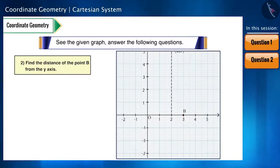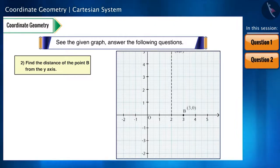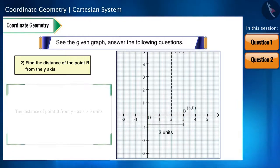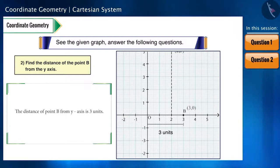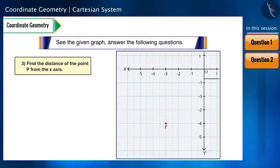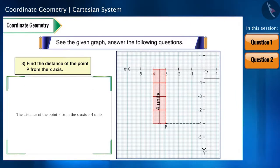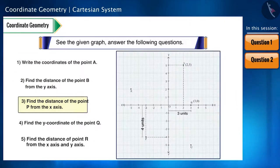Sub-question 2: find the distance of point B from the Y axis. We find the coordinates the same way, and they will be (3, 0). You can see that this point is located 3 units away from the origin, so the distance of this point from the Y axis is 3 units. Sub-question 3: find the distance of point B from the X axis. Plotting it the same way, we can see it is located 4 units away from the X axis.